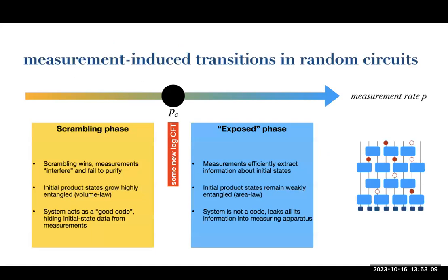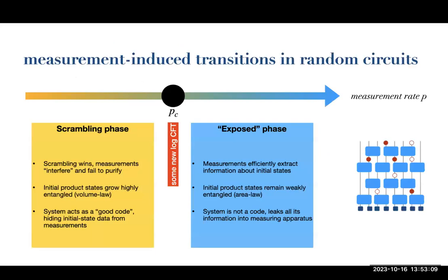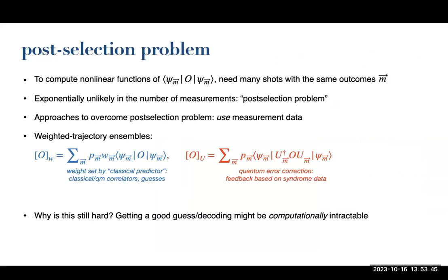The reason this phase transition was only discovered a few years ago is that if you throw out the measurement data, there is no phase transition. What happens instead is the system always rapidly goes to the maximally mixed density matrix. Making measurements throughout is like applying a dephasing operation to the system, and over time it gets completely dephased. The fact that you're keeping track of the outcomes is absolutely crucial to seeing any of this physics. That's why we need to go through this entire rigmarole of constructing predictors and seeing if they work.